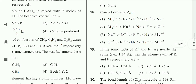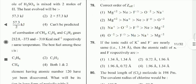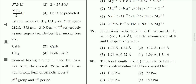Option 2nd is correct. Question 79: If the ionic radii of K⁺ and F⁻ are nearly the same at 1.34 Å, then the atomic radii of K (potassium) and F (fluorine) are 1.76 Å and 0.72 Å respectively.